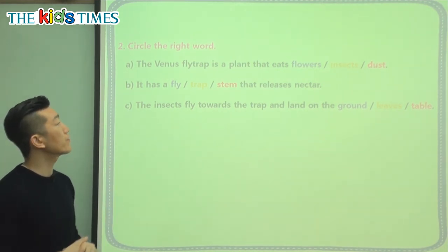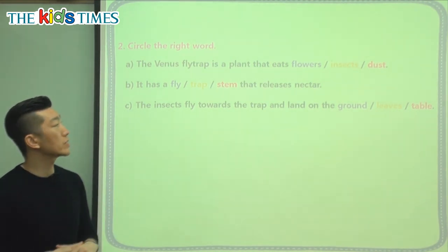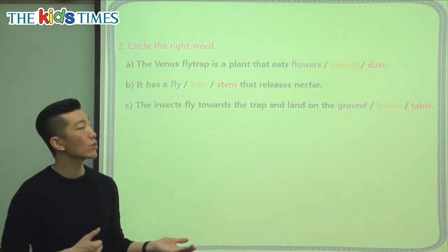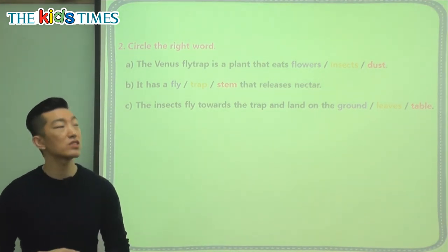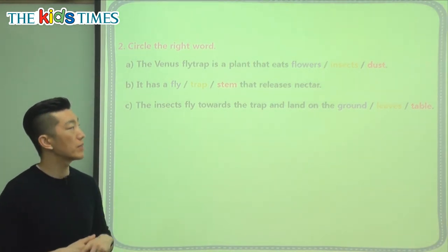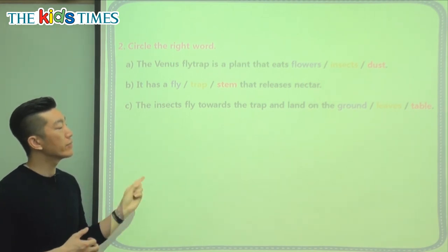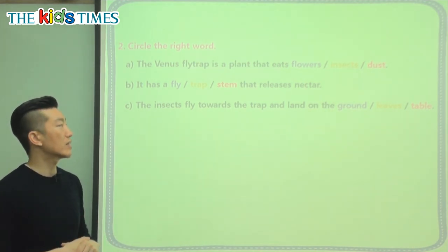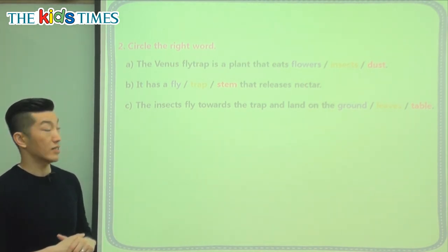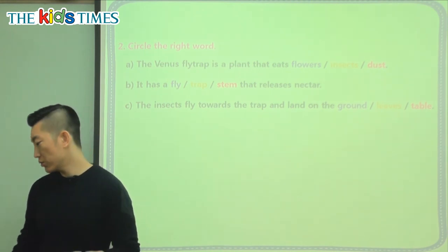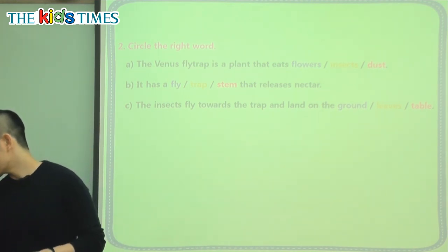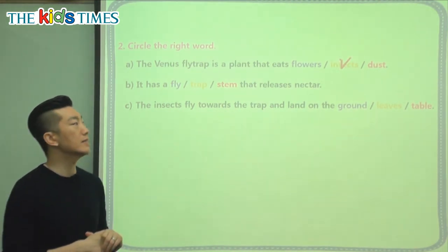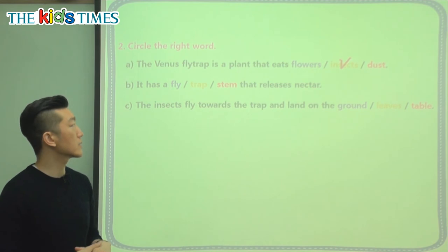So the Venus flytrap is a plant that eats flowers, insects, or dust? Dust was never mentioned, and a flower eating another flower — that's not what we learned. The correct answer is it eats insects, all kinds of different bugs.